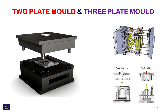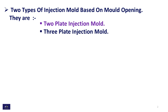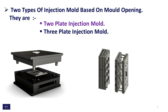Two types of injection mold based on mold opening: the 2-plate injection mold and the 3-plate injection mold. This is the simple image of the 2-plate injection mold, and this is the simple image of the 3-plate injection mold.